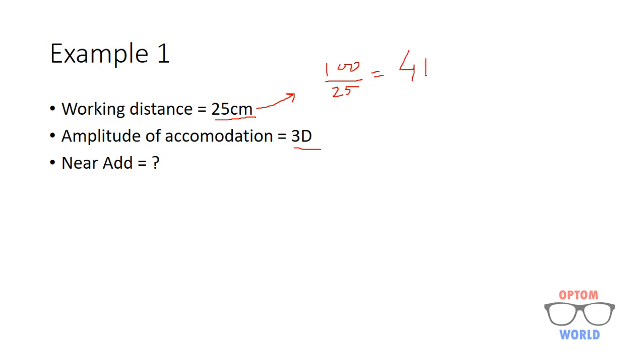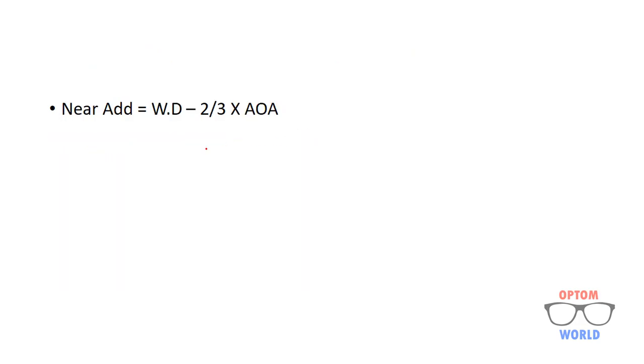4 diopters will be the working distance in this case and amplitude of accommodation is 3 diopters. Now let's apply the formula. Working distance is 4 diopters minus 2/3 and amplitude of accommodation was 3 diopters.